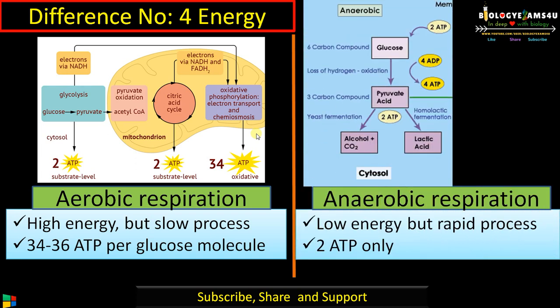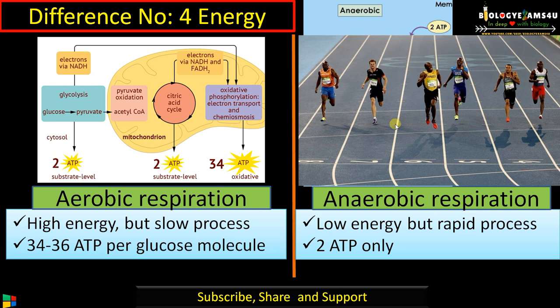Whereas in anaerobic respiration, there is low energy — only two ATP is formed — but it is a rapid process. During glycolysis, two ATP is formed rapidly. That is why during an athletic event or heavy exercise, our muscles prefer anaerobic formation of energy by glycolysis, and lactic acid fermentation happens inside muscle cells to form instant energy.